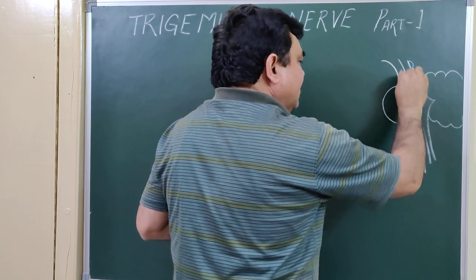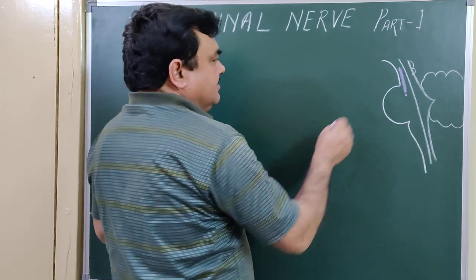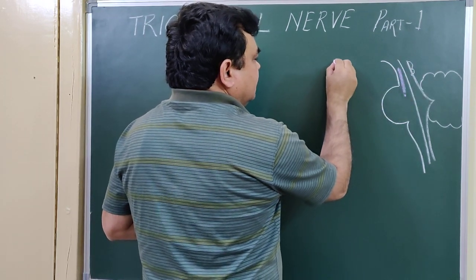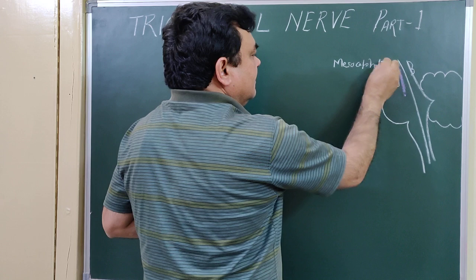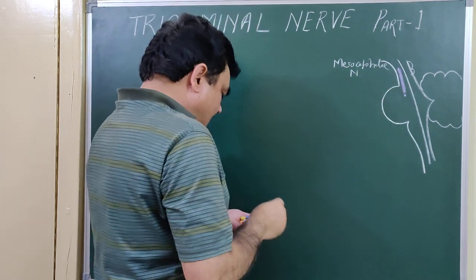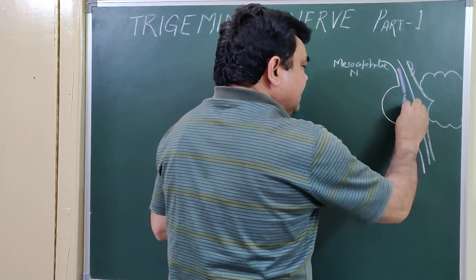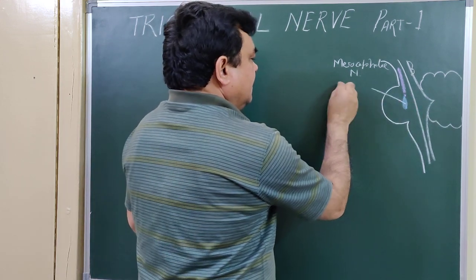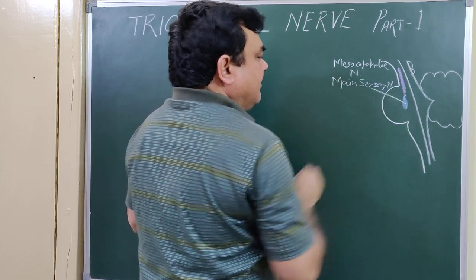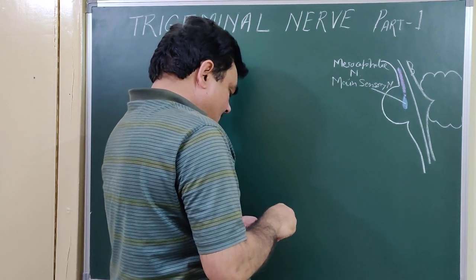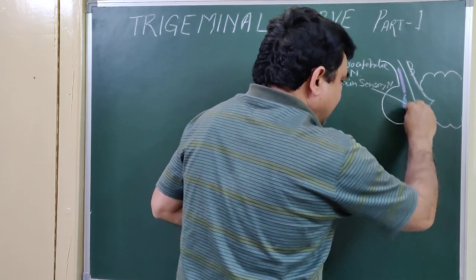This is the mesencephalic nucleus of the Trigeminal nerve. This nucleus is for proprioception. And the next nucleus is the main sensory nucleus of the Trigeminal nerve. And there is another nucleus — this is the spinal nucleus of the Trigeminal nerve.